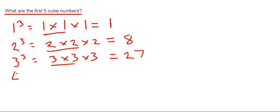Our next cube number would be 4 cubed, which is 4 times 4 times 4. Work out 4 times 4, that's 16, times 4 gives us an answer of 64.